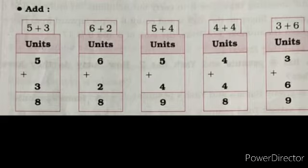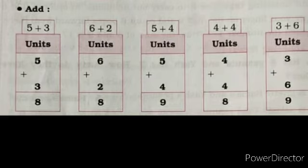Now children, 6 plus 2. Take your 6 fingers and 2 fingers and add them. Total fingers — 8. So your answer becomes 8. Or you can keep 6 in mind, hold up 2 fingers and count on: 7 and 8. So the answer becomes 8.